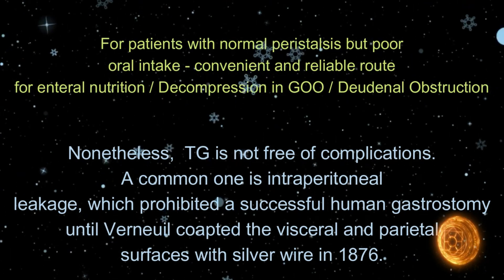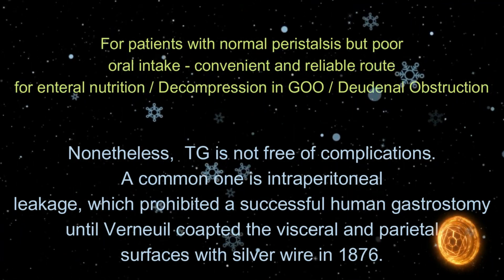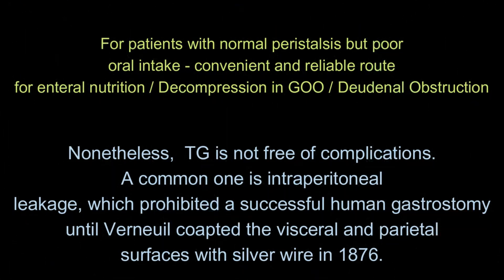Nonetheless, viewers, please keep in mind that tube gastrostomy is not free of complications. A common one is intraperitoneal leakage, which prohibited successful tube gastrostomy in early history. In the past, Burnol co-apted the visceral and parietal peritoneum with similar sutures in 1876.